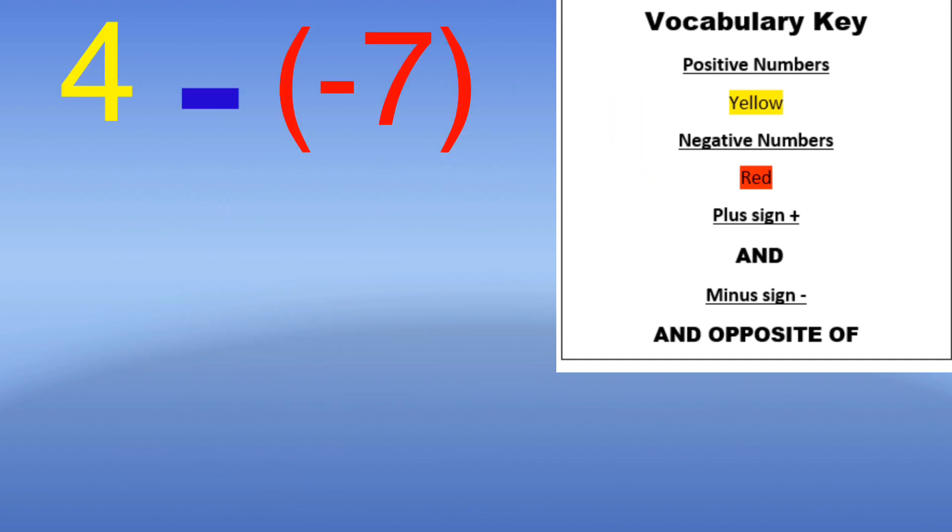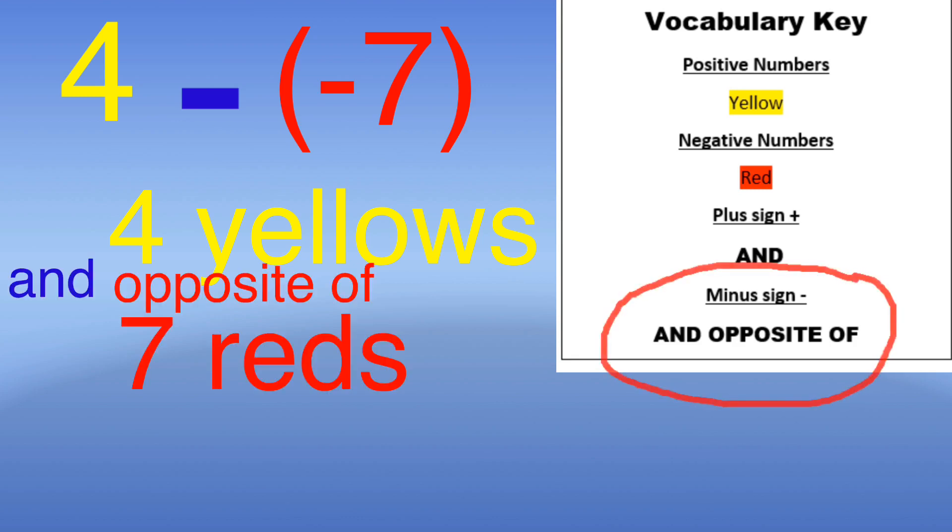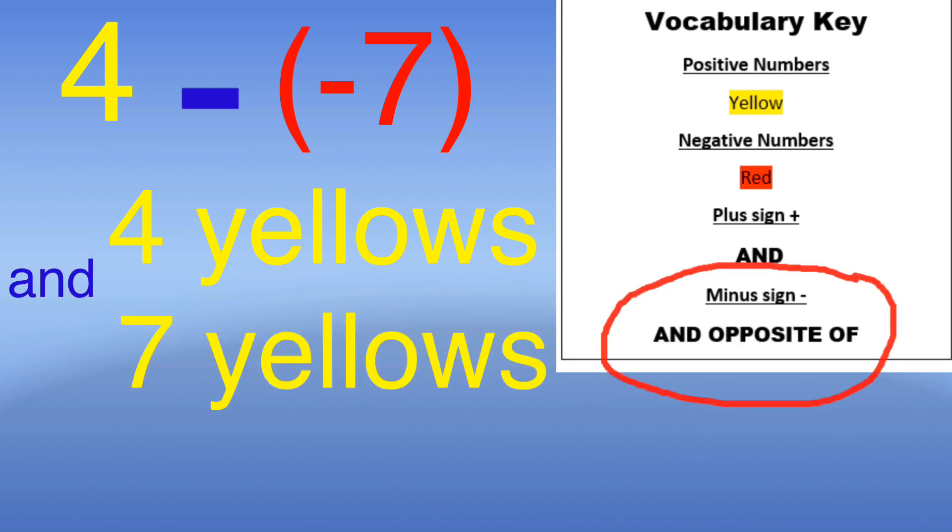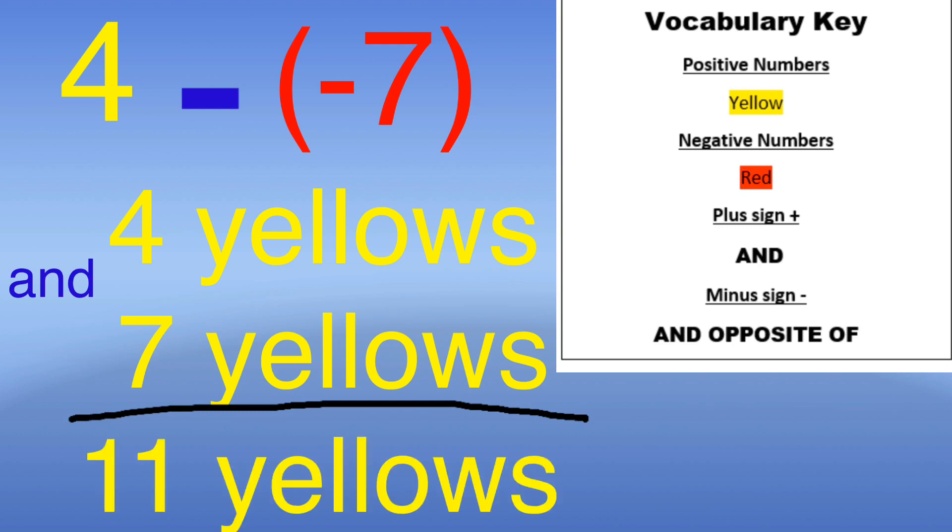Next problem is four minus negative seven. Using the vocabulary key that will give me four yellows and the opposite of seven reds, which is seven yellows. Now since I have a bunch of yellows I will just put my four yellows and seven yellows together to make eleven yellows, making the answer to this last problem positive eleven.